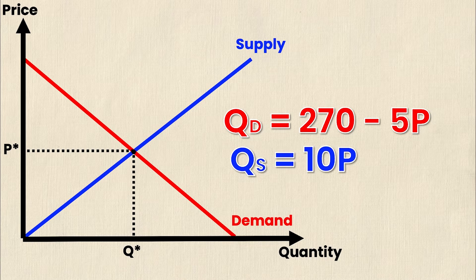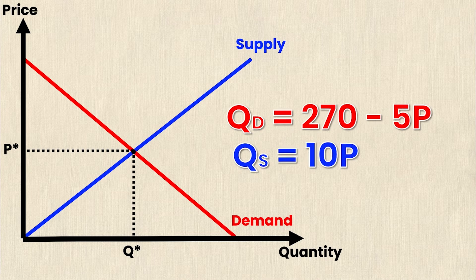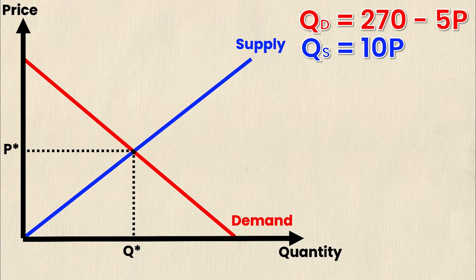The supply and demand equations are as follows. The demand equation quantity demanded is equal to 270 minus 5P and the supply equation is quantity supplied is equal to 10P. So now that we have our demand and supply equation we're going to take note of them and we're going to use them to calculate four key points on this generalized supply and demand graph.